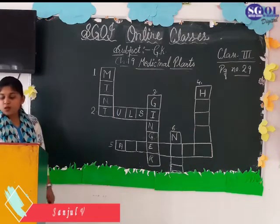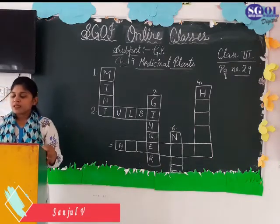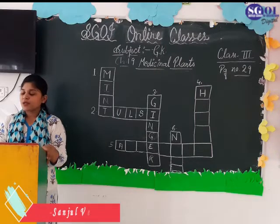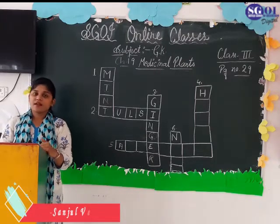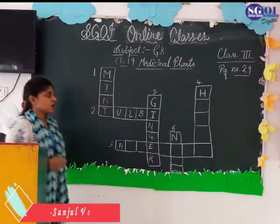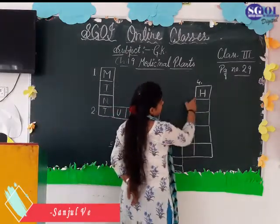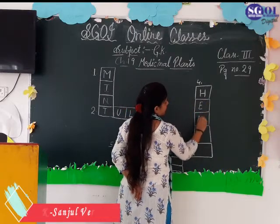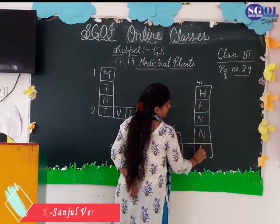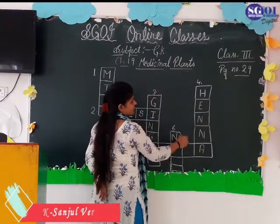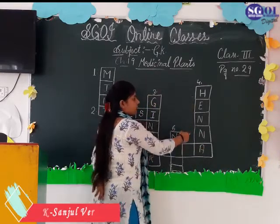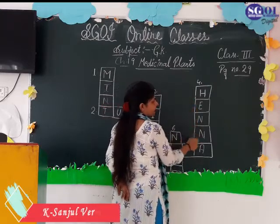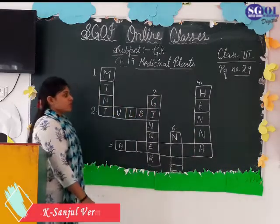Now move to fourth. Fourth is: the leaves of this plant have a cooling effect and are used as a natural dye. That is henna. The spelling of henna is H-E-N-N-A. In one box, you have to write only one letter.